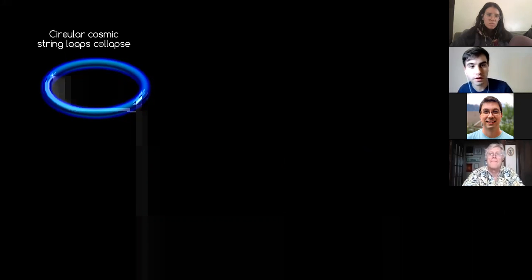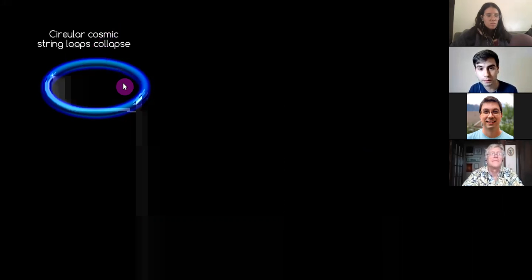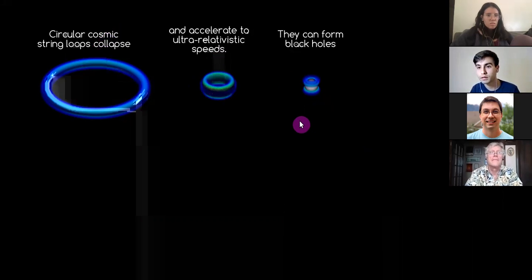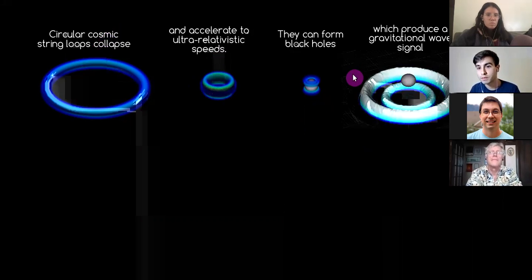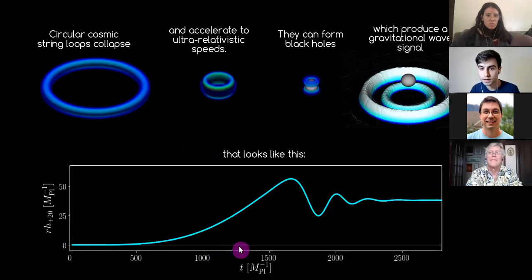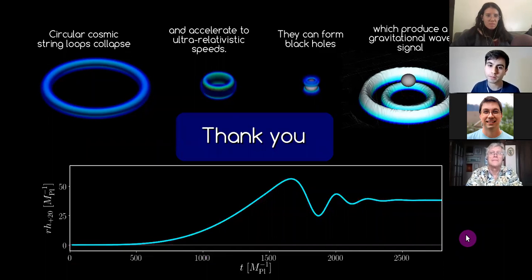To summarize: in this talk we studied how circular cosmic string loops collapse using numerical relativity. They accelerate to ultra-relativistic speeds and form black holes if they are massive enough. These black holes are excited and produce a peculiar gravitational wave signal consisting of an inspiral, merger, and quasi-normal modes with a large gravitational wave memory contribution. Thanks very much for the invitation.